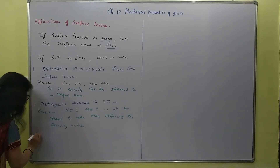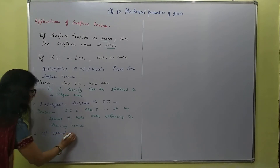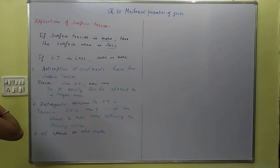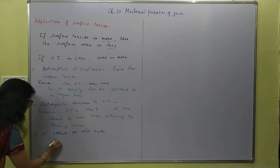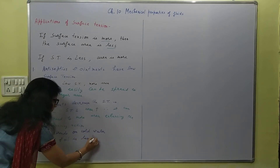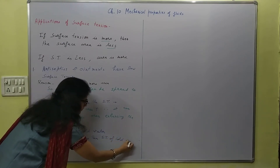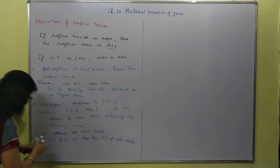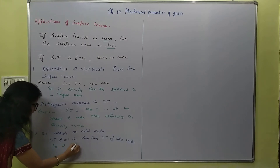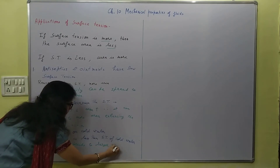Third: oil spreads on cold water. Why? Because the surface tension of oil is less than the surface tension of cold water, so it spreads to a larger area.